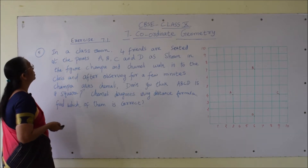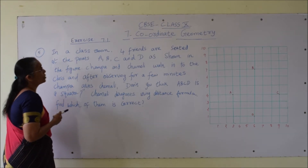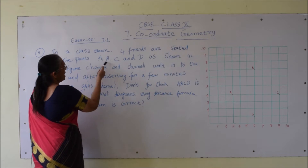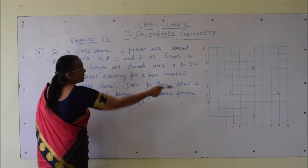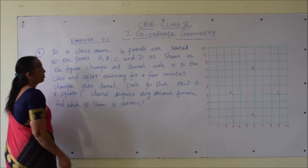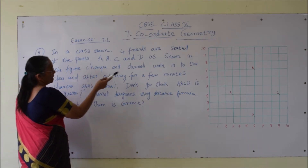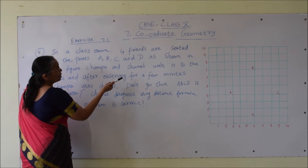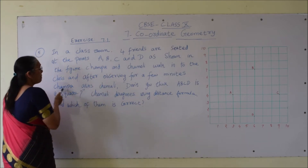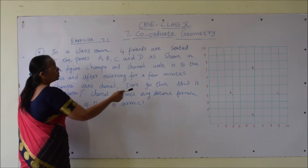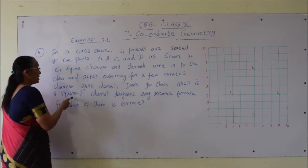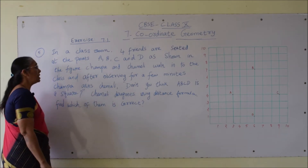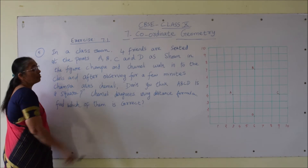Problem number 5: in a classroom, 4 friends are seated at the points A, B, C and D as shown in the figure. Champa and Chameli walk into the class and after observing for a few minutes, Champa asks Chameli, 'Do you not think ABCD is a square?' Chameli disagrees. Using the distance formula, find which of them is correct.